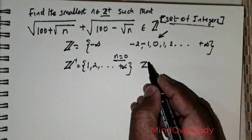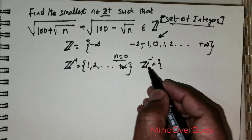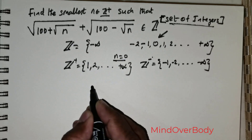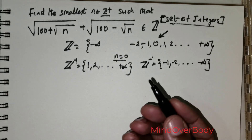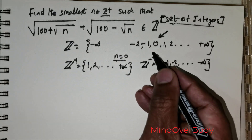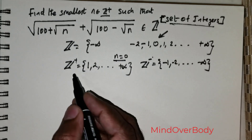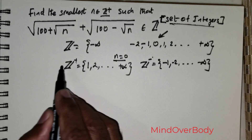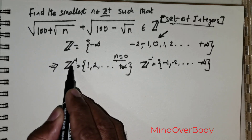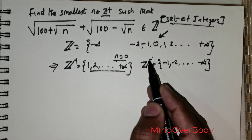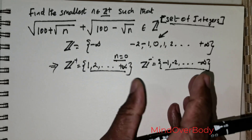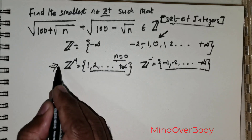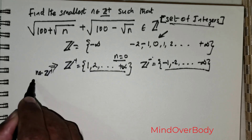In fact, 0 is also not present in the set of negative integers. If you write the set of negative integers, they start from negative 1, negative 2, and go up to negative infinity. So I want to make this point very clear: when we talk about positive integers, the set starts at 1; when we talk about negative integers, the set starts at negative 1. We are expected to choose n to be an element of the positive integers.